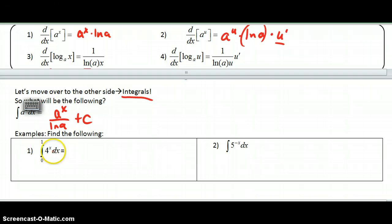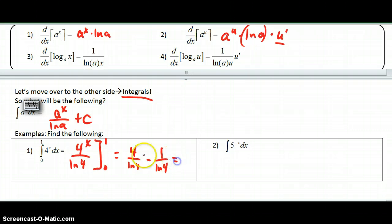Okay? So if I do these, the antiderivative of 4 to the x is going to be 4 to the x over ln 4. And I'm going to evaluate that from 0 to 1. So this would be 4 over ln 4 minus 4 to the 0 then would be 1 over ln 4. So if I have 4 of these minus 1 of these, I'll end up with 3 of these. So I get 3 over ln 4.